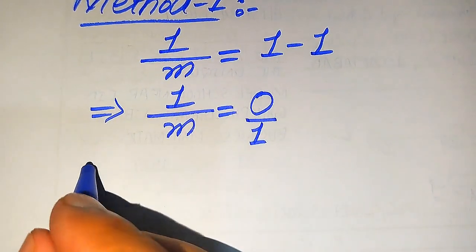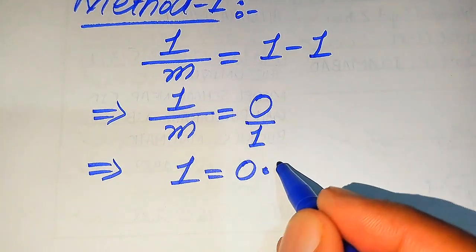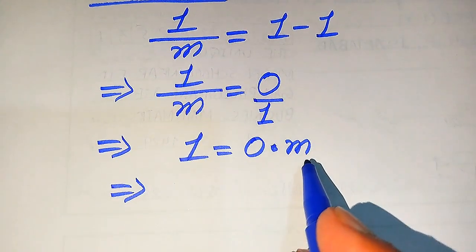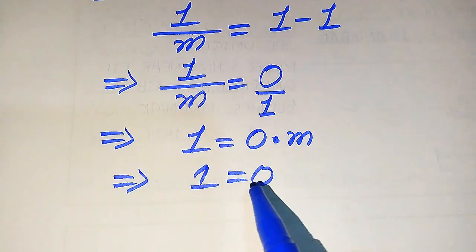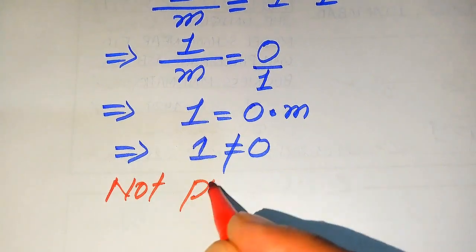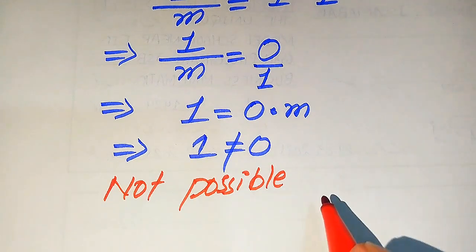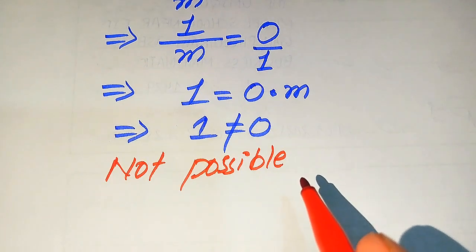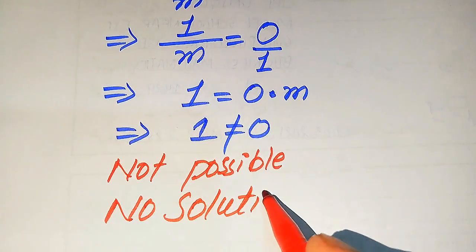So it is not possible to take the reciprocal. Instead, we move m to the right-hand side, giving 1 equals 0 times m. Since zero multiplied by any number is zero, we get 1 equals 0. But 1 is not equal to 0, so this is not possible. Therefore, we cannot get any value of m from the first method, and we conclude the question has no solution.